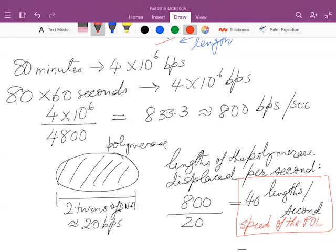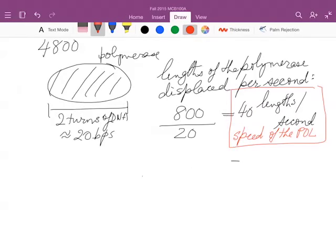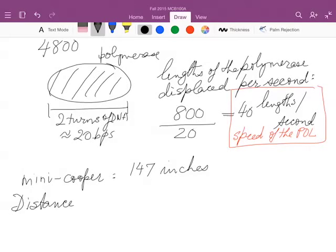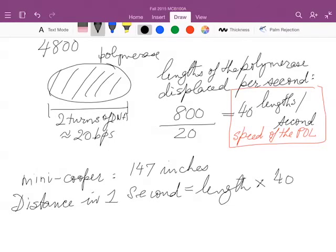So now let's try and relate this to the equivalent speed of an automobile that covers as much of its length per second as the polymerase does. And I'm going to choose as the automobile, the answer will depend on the automobile, I'm going to choose as the automobile a Mini Cooper. And I checked the length of a Mini Cooper on the Mini Cooper website, and that told me that the length of this automobile is 147 inches. So in one second, if the automobile were to cover 40 of its lengths, then distance traveled in one second would be length multiplied by 40, which is 147 into 40 inches.